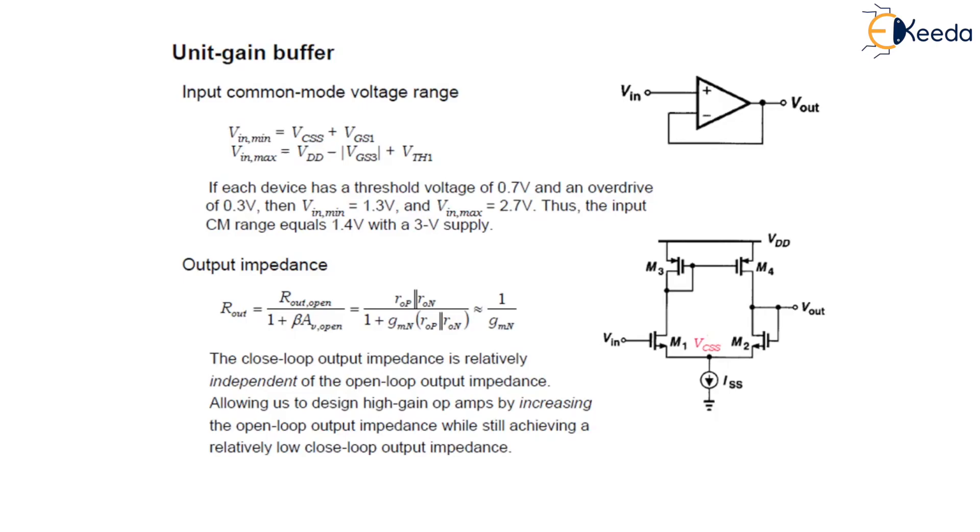So this independence of the closed loop output impedance allows us to design a high gain op-amp by increasing the open loop output impedance. This is all in this lecture. In the next lecture we will study about telescopic cascode op-amp. Thank you.